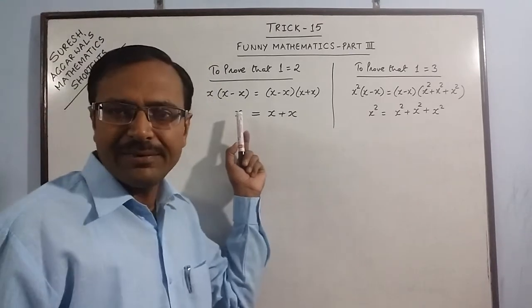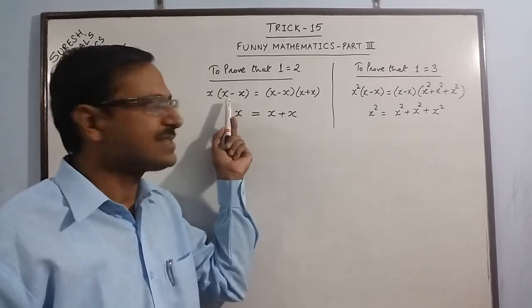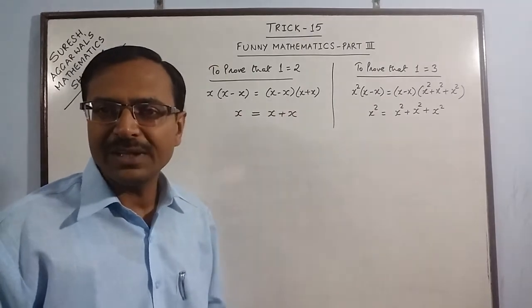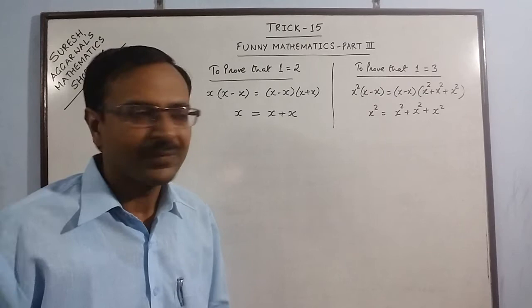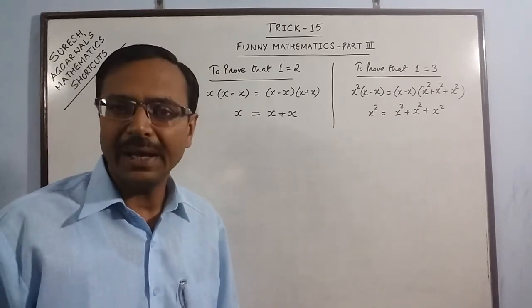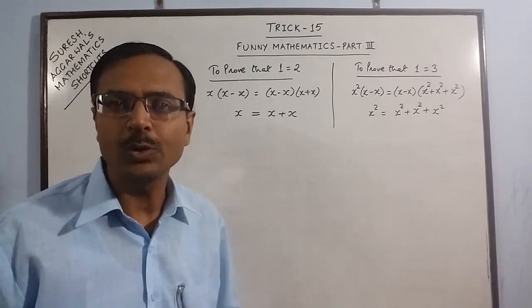When we have a factor which is equal to 0, like x minus x is 0, then ultimately everything comes out to be 0 only and we cannot proceed further. 0 is not a factor of any number, so we cannot cancel 0 on both sides.